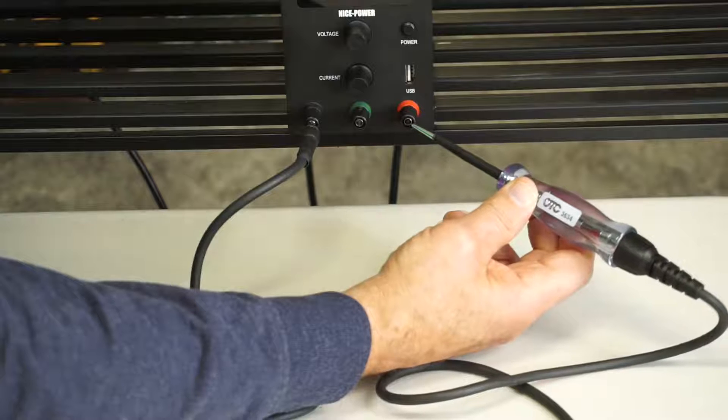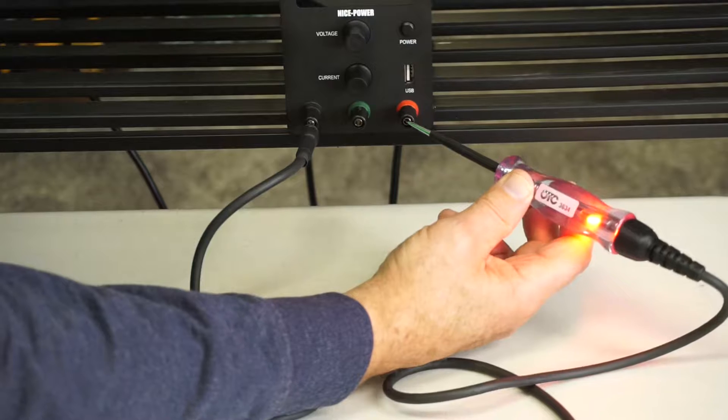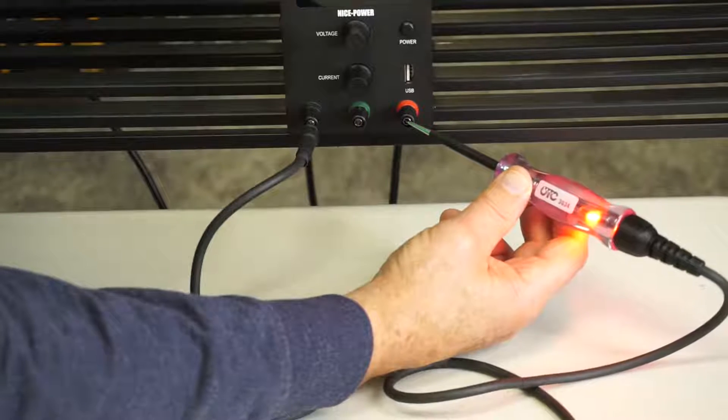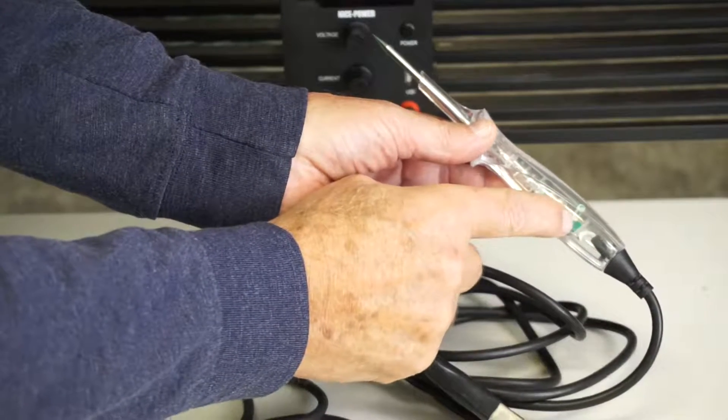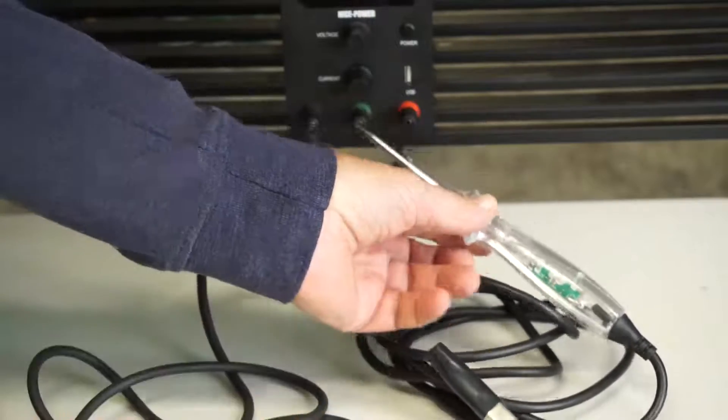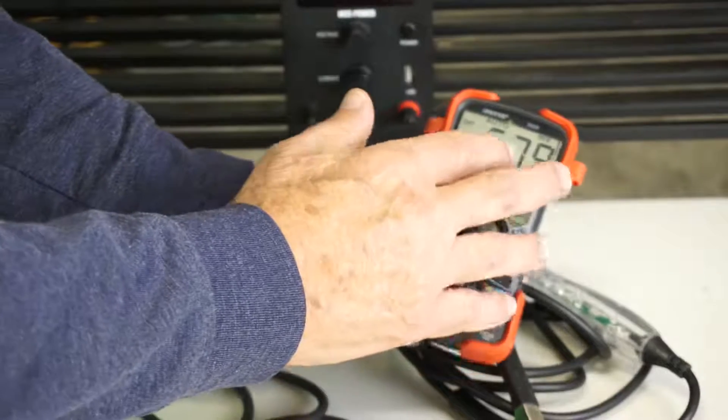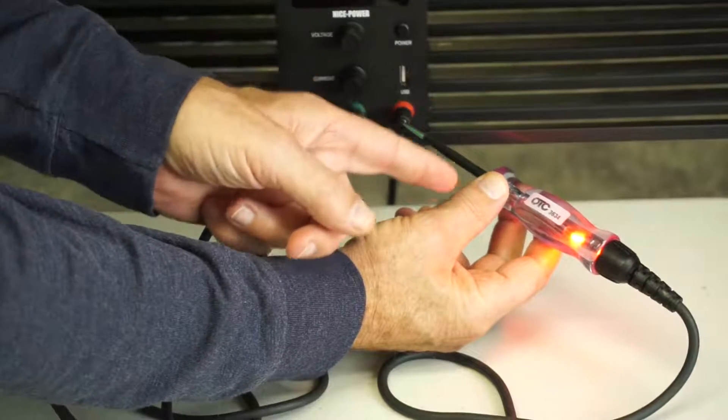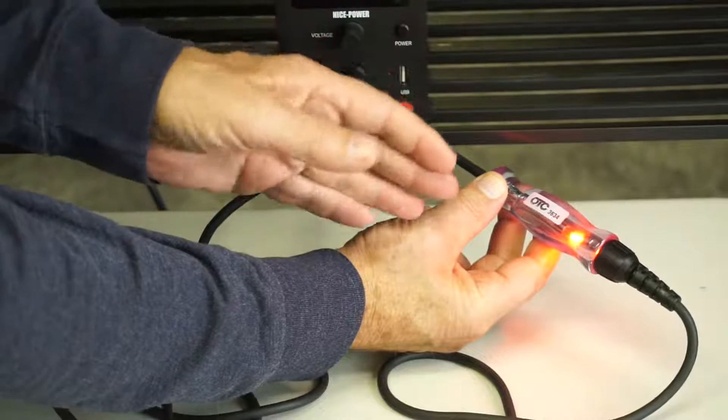But if it does light up, that's not 100% conclusive. That's only drawing maybe 150 milliamps. And that goes double for these LED type test lights which only draw about 50 milliamps. And a voltmeter that could tell us that we have battery voltage yet only draws a few milliamps. We need to make sure that not only do we detect battery voltage but that the circuit can actually carry a load.